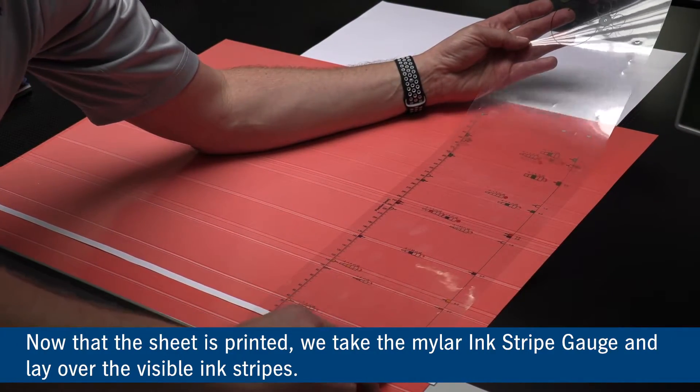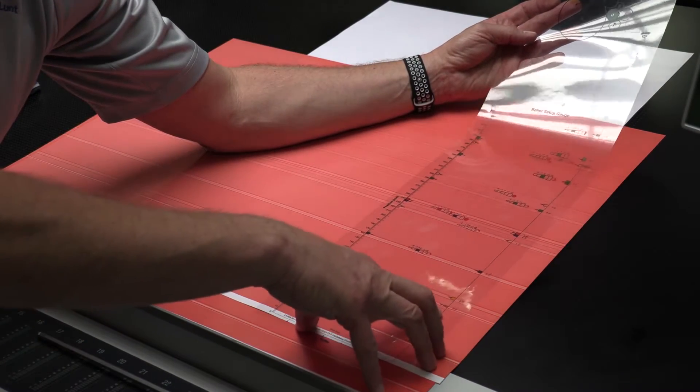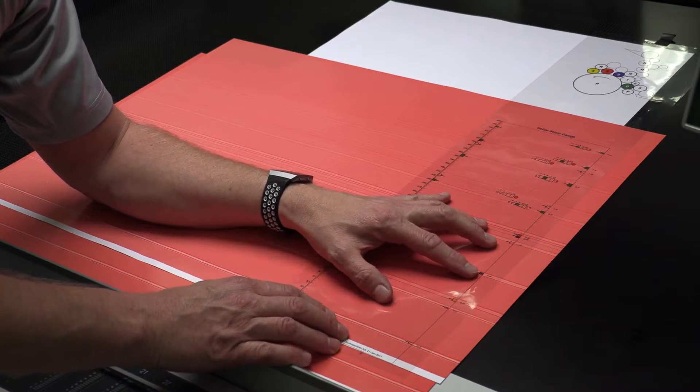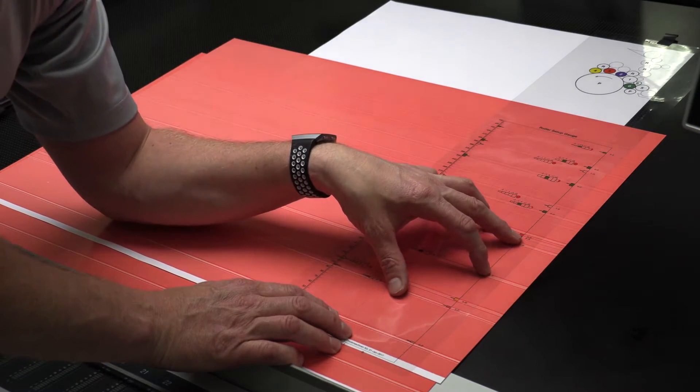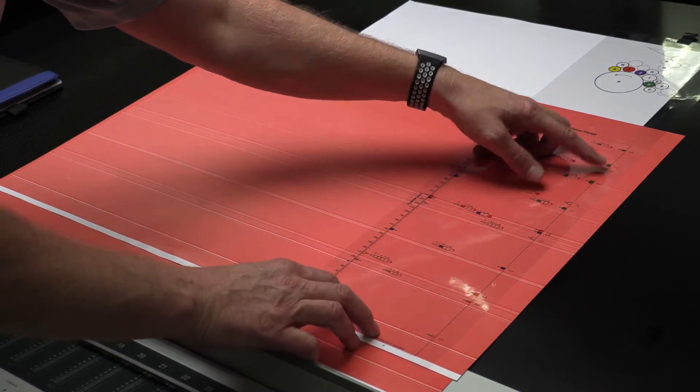So from the lead edge, we set the mylar down and we can see 4 to plate, 3 to plate, 4 to the rider roller, 2 to the plate, 1 to the plate, 2 to the rider roller, 3 to the rider roller and at the back there we can see 1 to the rider roller.